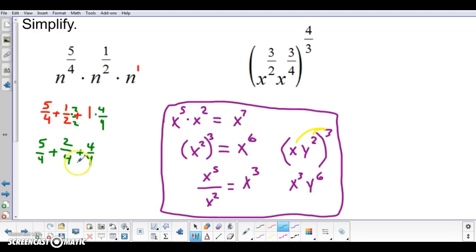So I'm going to have five-fourths plus two-fourths plus four-fourths. And then once I have the same denominator, I add the numerators together. Five plus two is seven, plus four is eleven. So this is going to be eleven-fourths when we're all done with it, which means that the answer to this simplified expression is n raised to that power, n to the eleven-fourths power.